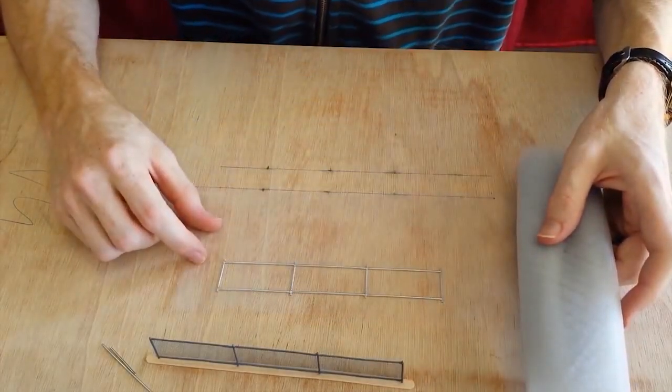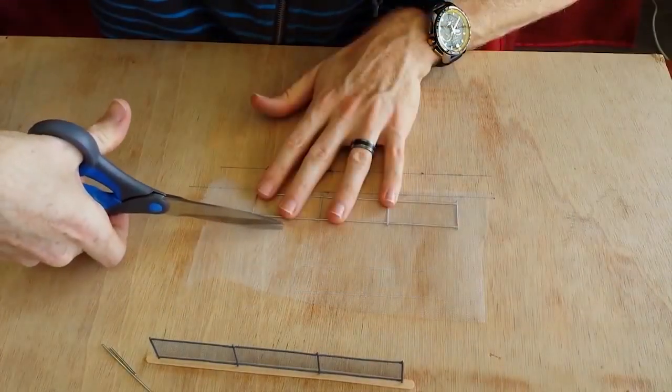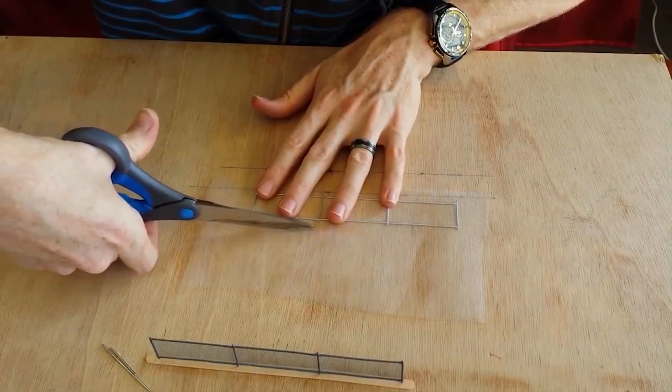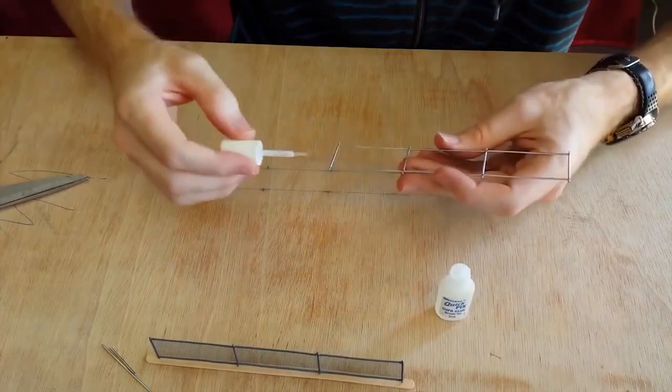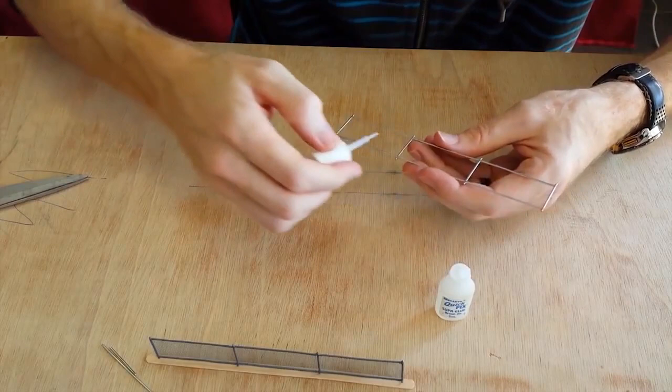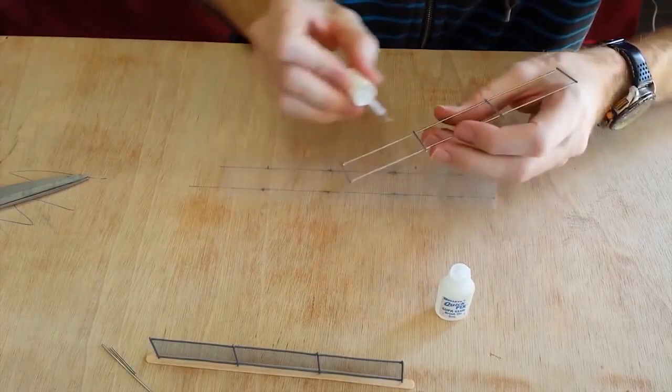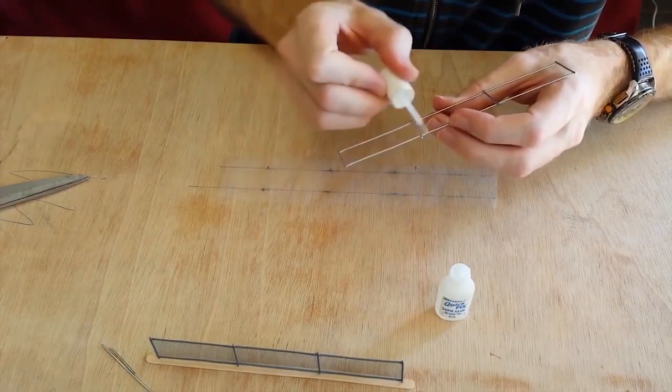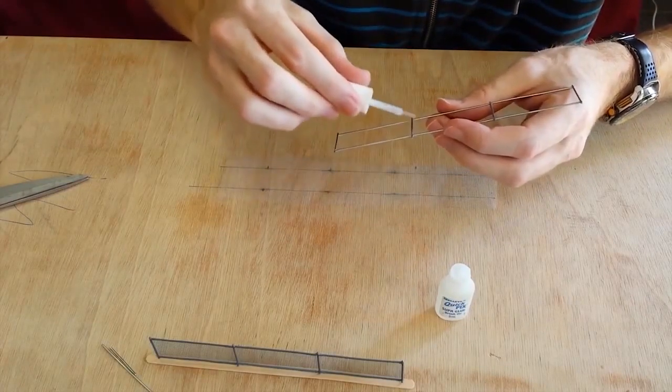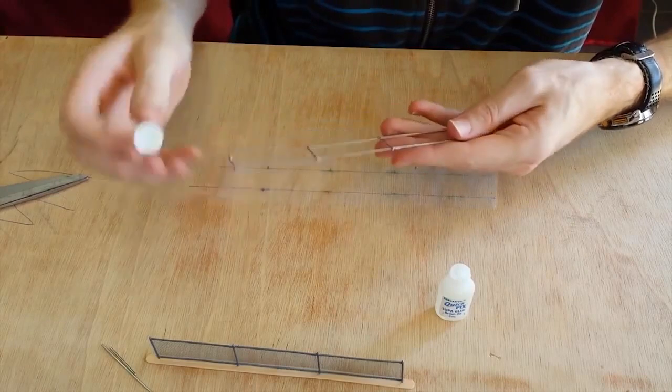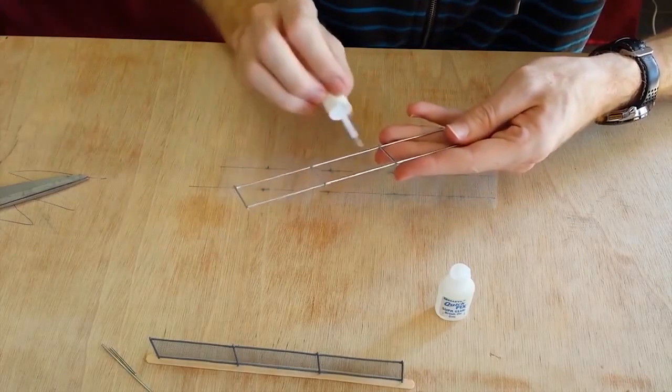Next get some nylon tulle and cut a small piece large enough to cover the fence framework. To fix the nylon tulle to the wire frame I use super glue and I only need to put a small amount of glue around the framework of the fence. I do my best to get the nylon nice and flat on the plywood and then position the framework of the fence over the top and drop it on.